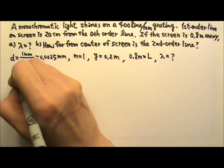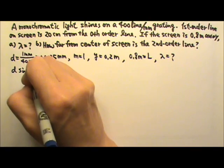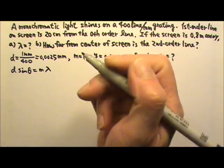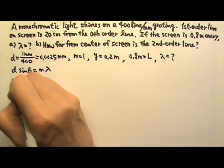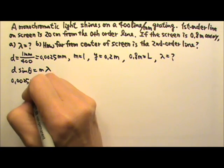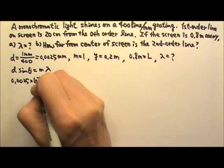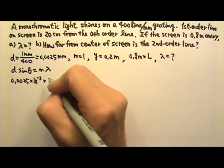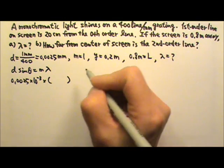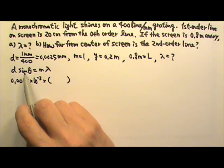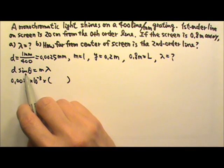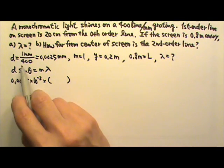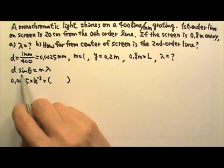So we can use D sine theta equals to M lambda. The D is 0.0025 milli is 10 to the negative third, and then times sine theta. Now, if the angle is small, or if Y is much smaller than L, we can use Y over L to replace the sine theta.